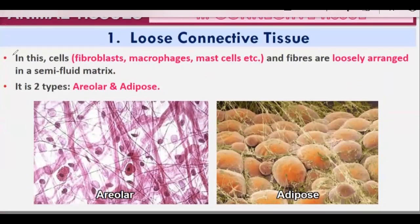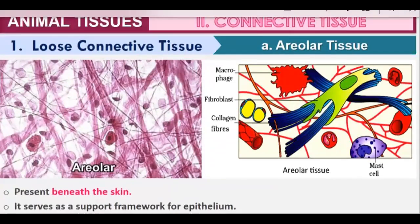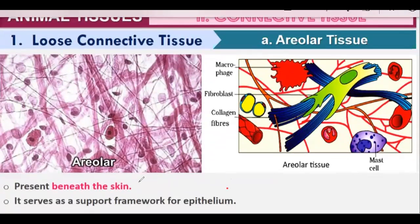In loose connective tissue, cells and fibres are loosely arranged in a semi-fluid, jelly-like matrix. Areolar and adipose tissues are both types of loose connective tissue with semi-fluid matrices.